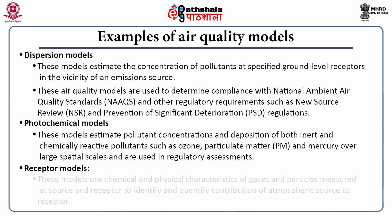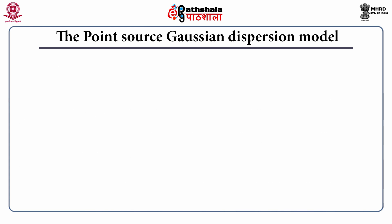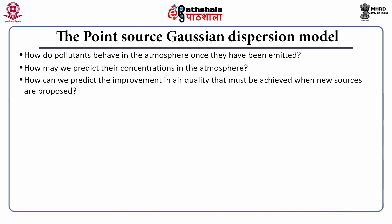The third type is the receptor model. These models use the chemical and physical characteristics of gases and particles measured at source and receptor to identify and quantify the contribution of atmospheric sources to the receptor. Now, the point source Gaussian dispersion model is one of the widely accepted models to measure the concentration of pollutants emitting from a point source, to help answer questions such as: how do pollutants behave in the atmosphere once they have been emitted?